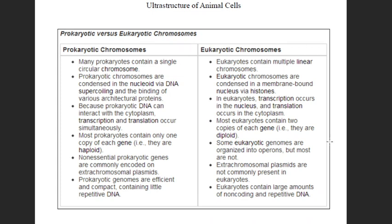Comparing prokaryotic and eukaryotic cells: prokaryotic cells contain a single circular genome or chromosome, while eukaryotic cells have multiple chromosomes — the genome is divided into several separate chromosomes. Prokaryotic chromosomes are condensed in the nucleoid via DNA supercoiling and binding of various architectural proteins. Although prokaryotic cells do not have histone proteins, histone-like proteins are present which help in supercoiling of the DNA.